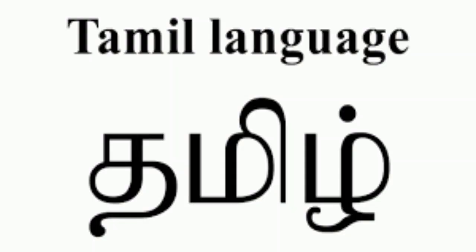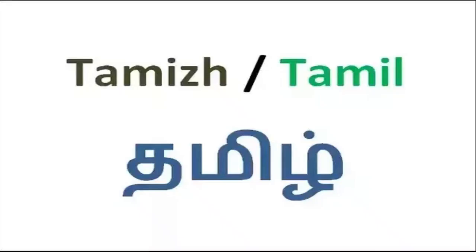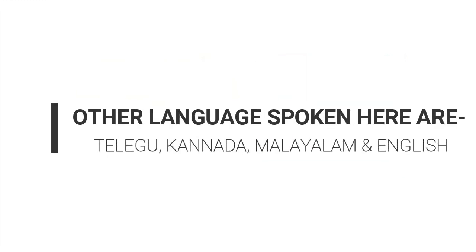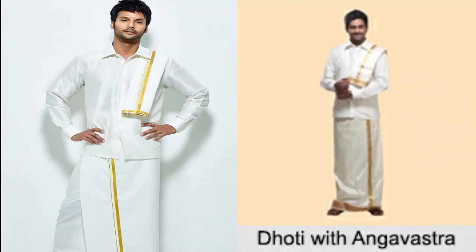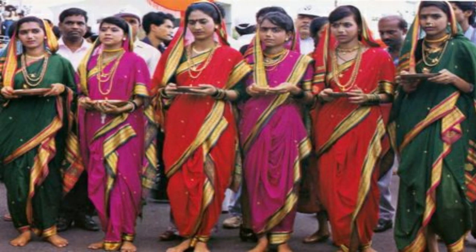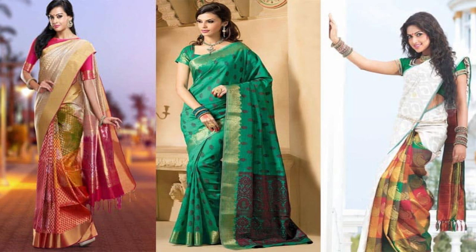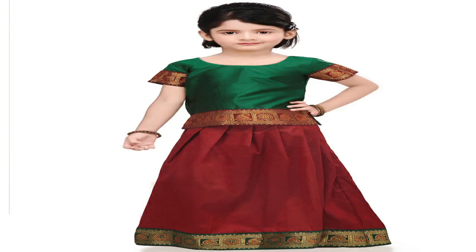Tamil is the official language spoken by most of the people. Other languages spoken here are Telugu, Kannada, Malayalam, and English. Traditionally men wear dhoti or lungi and shirt; women mostly wear sarees. The silk sarees of Kanchipuram are very famous. The traditional dress for small girls is pavadai blouse; slightly older girls wear half sarees. The main festival celebrated here is Pongal.